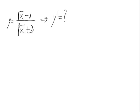Given the function y equals the square root of x minus 1 divided by the cube root of x plus 2, let's calculate its derivative. First of all, we can see that we have a fraction of a function divided by another function.